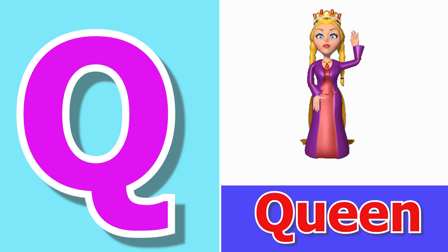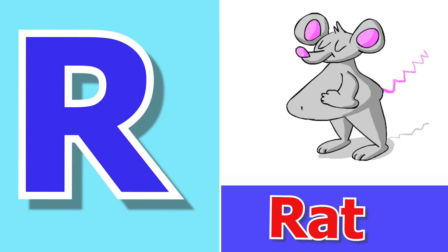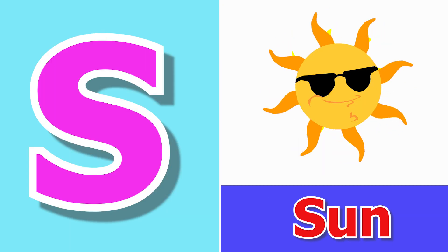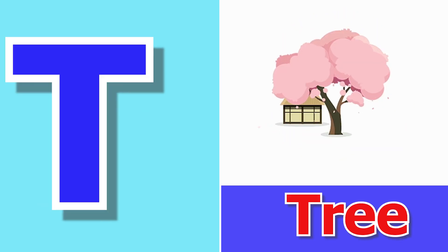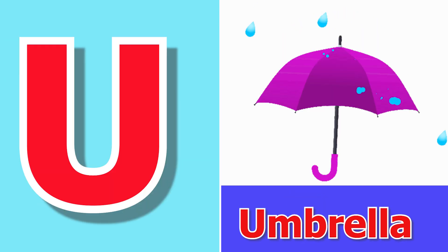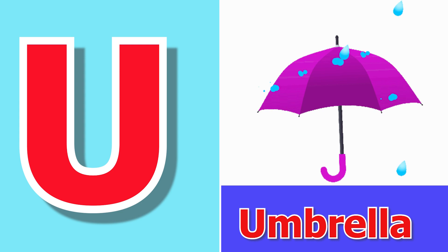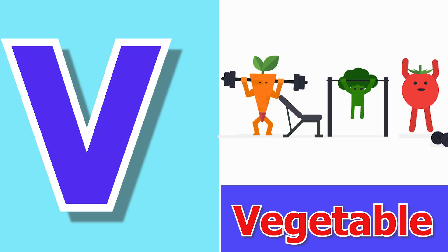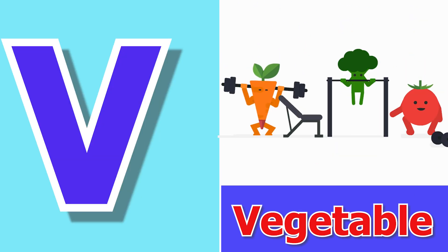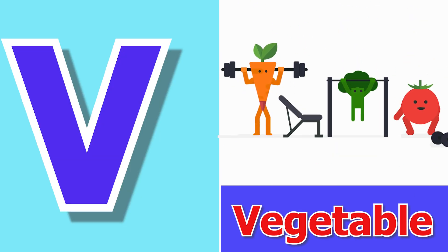Q for Queen, R for Rat, S for Sun, T for Tree, U for Umbrella, V for Vegetable.